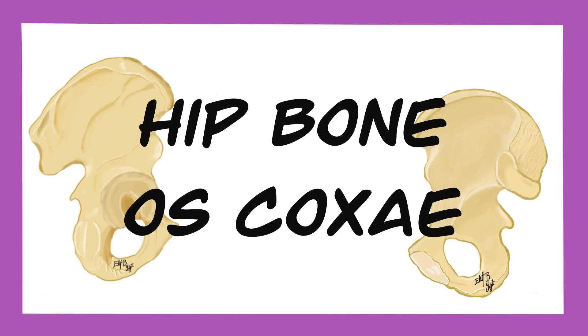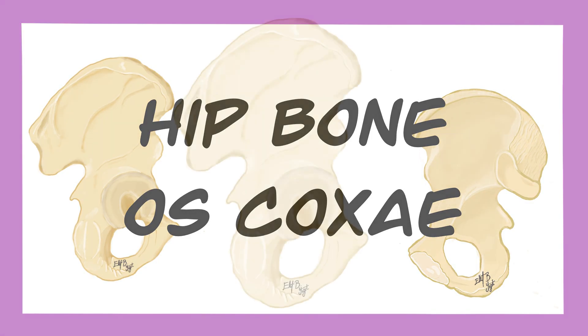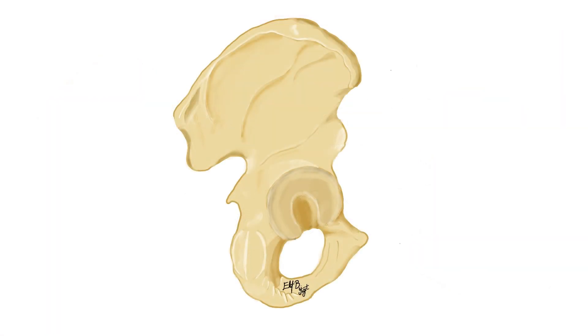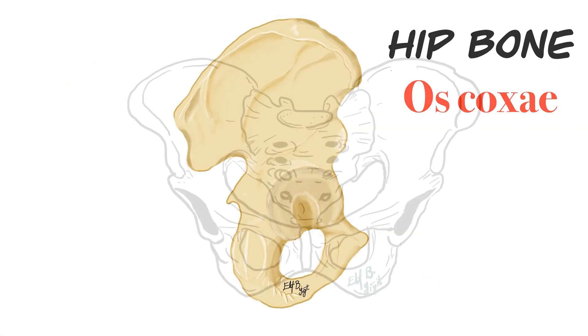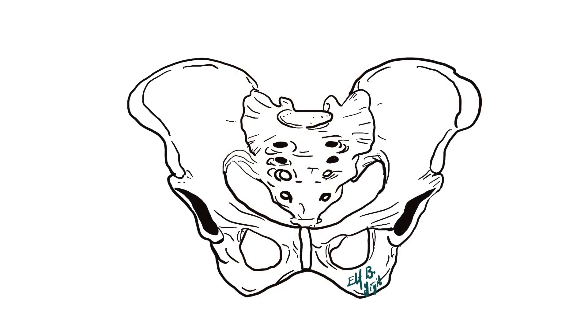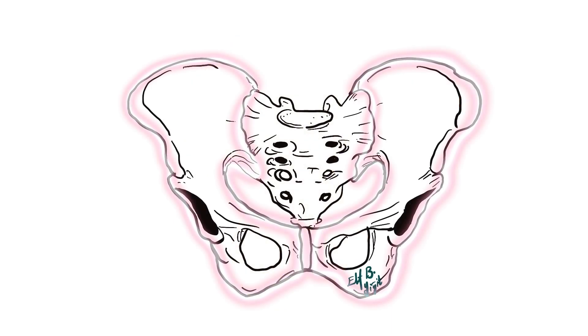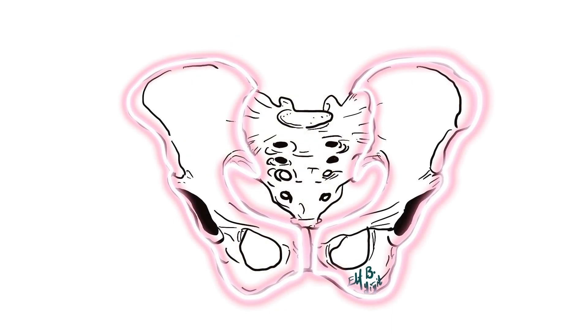In this video, I will talk about the structural anatomy of the hip bone. The hip bone is also known as os coxa in Latin. Os coxa is an irregularly shaped and flat bone that is located bilaterally on the pelvis.